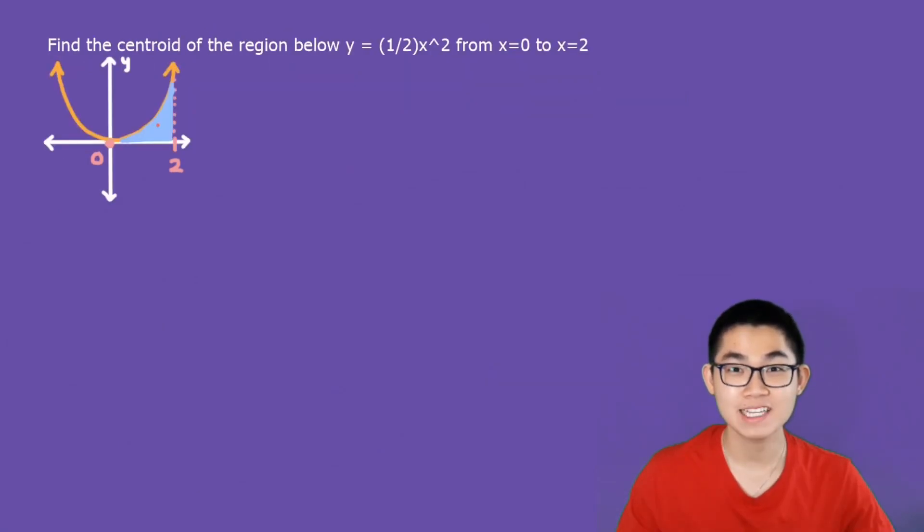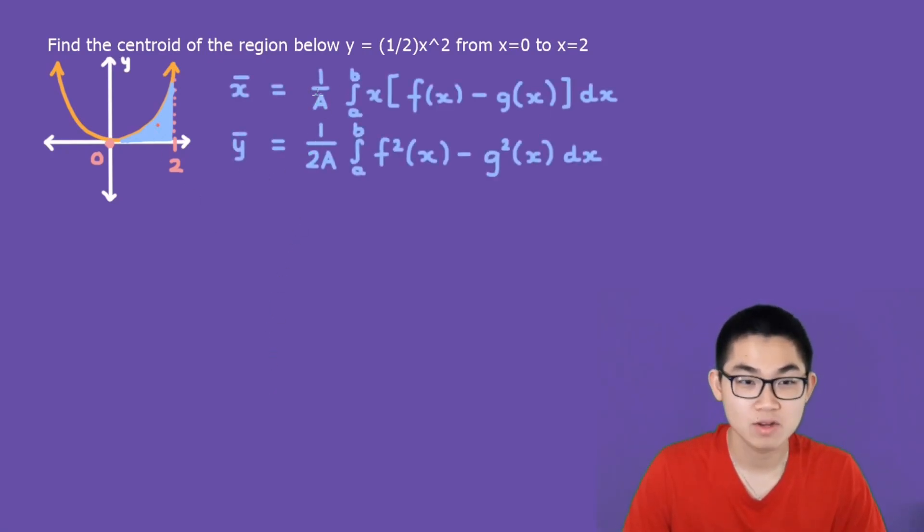Now let's find the center of gravity given a shape. So find the centroid of the region below y equals 1/2 times x squared from x equals 0 to x equals 2. So basically if you draw this graph, you want to find the centroid between 0 and 2 of this shape or the blue shape. And that's going to be somewhere around the orange point. Here are the formulas. Now notice that you have to find the area under the curve first. And I already explained it in my previous video, but don't worry, I'll re-explain it today.